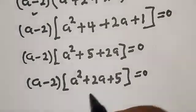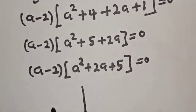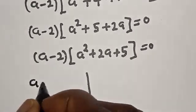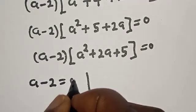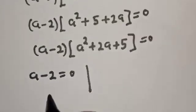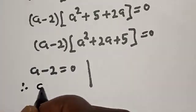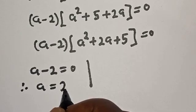There are two cases. The first case is a minus 2 equals zero, therefore a is equal to 2.